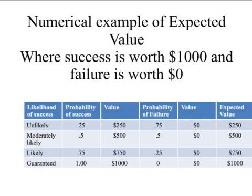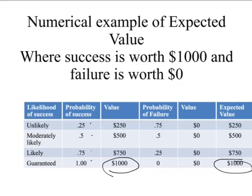We can do this numerically with probabilities of 0.25, 0.5, 0.75, or guaranteed. Guaranteed, we already did — 100% times $1,000 gives $1,000. At 0.25 probability of success: 0.25 times $1,000, plus zero, gives an expected value of $250. At 50% probability of success: 0.5 times $1,000 gives you $500, and that's the expected value if you're moderately likely to succeed.